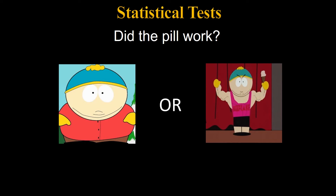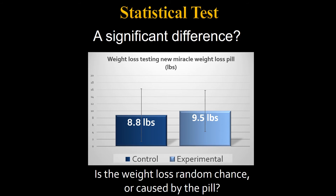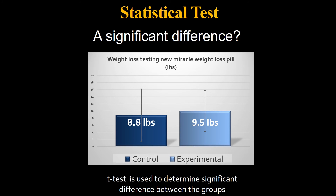Did the pill work? A lot of you are probably thinking it didn't really work. Your intuition is good, but we're going to use our data and analyze it using statistics to figure out whether or not it worked for real. Significance has to do with randomness — if we ran this experiment again, would the control group have lost more weight than the experimental group? The averages are kind of close, but there's a lot of variation, which indicates the result might be random.